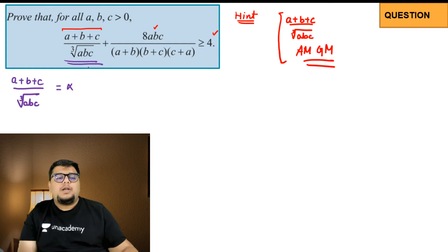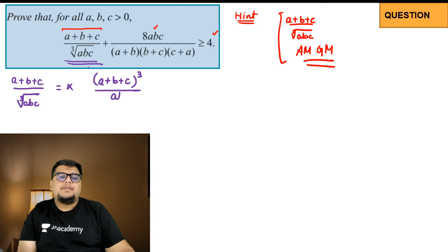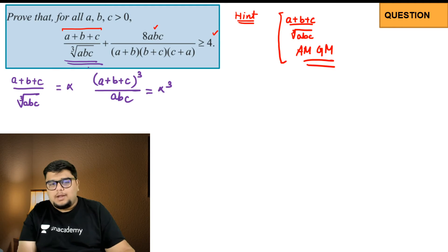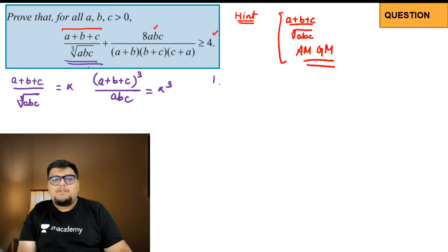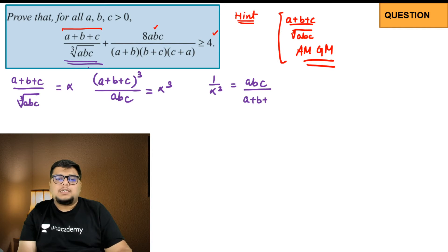Once you try to cube it, you will get (a+b+c) whole cube divided by abc, equal to alpha cubed. So if alpha cubed is that, what will 1 upon alpha cubed be? That will be abc divided by (a+b+c) whole cube. I want you guys to remember this because we are going to use it.